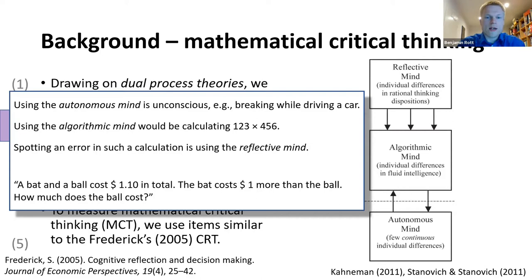If you were to calculate a task like 123 times 456, this would be using the algorithmic mind. And if in this calculation you spotted an error, this would be using the reflective mind.